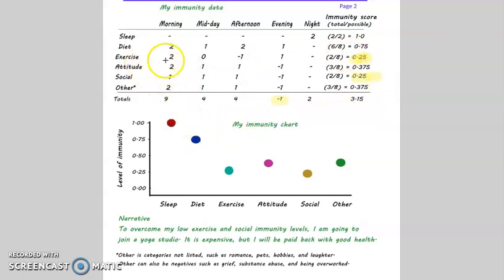I did the same for exercise, which I started off great. But then I sat on my booty all afternoon working. So I gave myself a minus one, because I could tell I was sitting way too long. That's a negative there. Two divided by eight, 0.25. Oh, I flagged that one. And I flagged my social too, really low. I finished my chart.